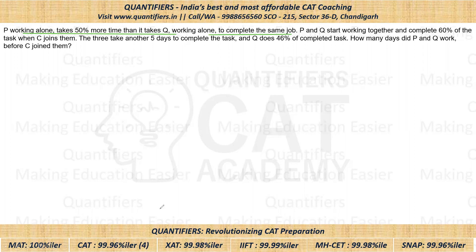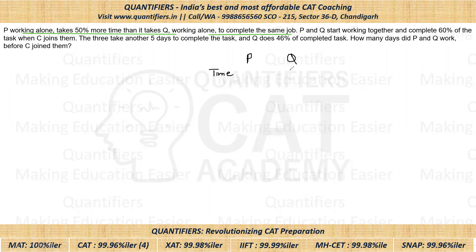Let us use this information. If P and Q are doing the same work, then P is taking 50% more time. So we can say that if Q takes 2 days, P will take 3 days — the ratio of their time will be 3:2. Now, efficiency is inversely proportional to time: if time is more, efficiency is less, and vice versa. So the efficiency ratio will be the reciprocal: 2:3 for P and Q respectively.